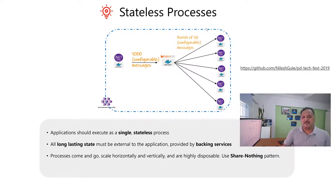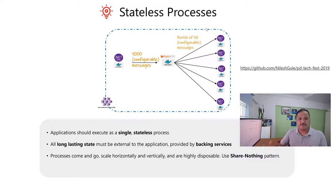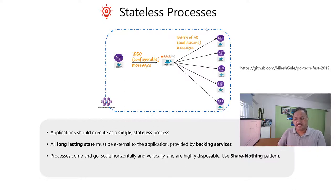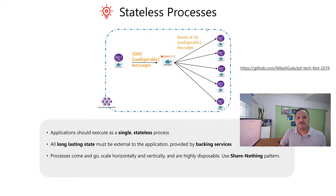What stateless process means is we should try not to have the state in the memory of the process — the application should not try to store state as part of the process itself. If we look at earlier implementations like IIS web servers, we used to have things like session state or application state, which allowed us to store information for a particular user session on the IIS servers. Now imagine that you have to scale the application. If the state is part of the process residing in the memory, then it becomes difficult to scale — you can only do vertical scaling, not horizontal scaling. To scale horizontally, we have to externalize the state. Most modern application languages and frameworks support externalizing the state. As we talked about in the backing services video, anything that is long-lasting state must be external to the application and provided using a backing service.